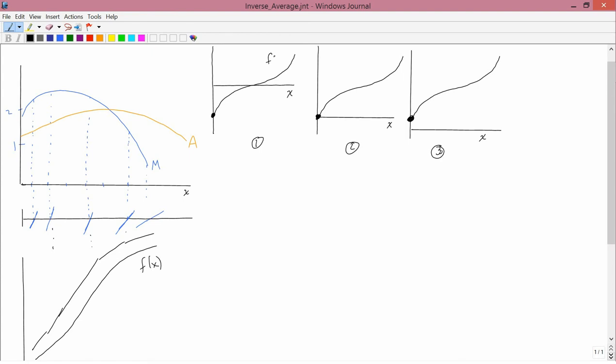So just to be clear, these are different possibilities for the f of x that generated the average and marginal on the left, and we need to figure out which one is correct. To do this, we need to use information from the average.